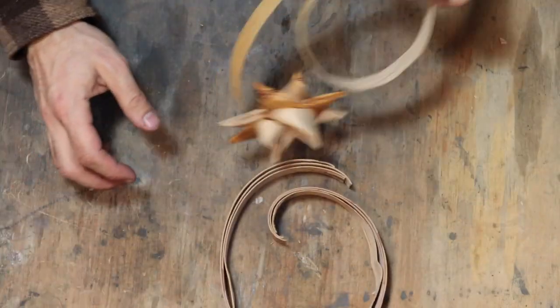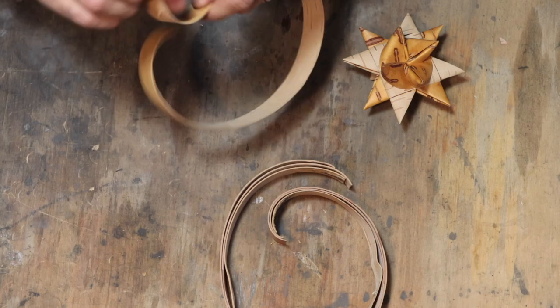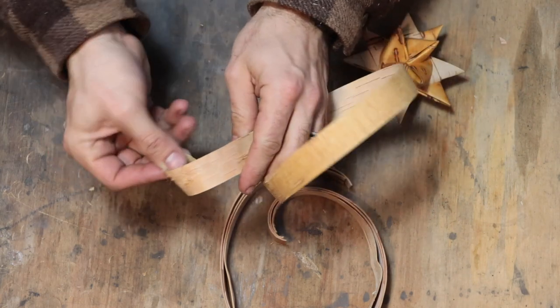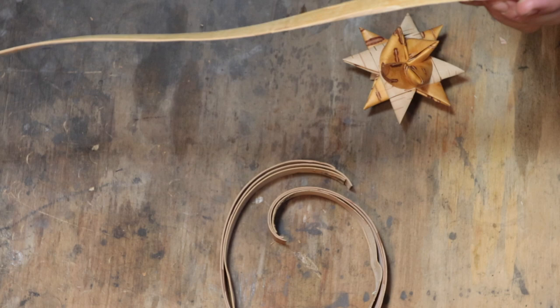So I'm going to start with the birchbark. If it's no longer very pliable, you can soak it. This stuff is doing alright.